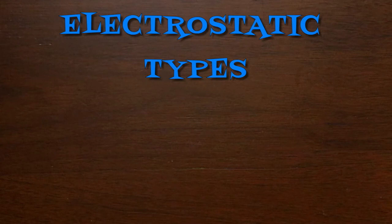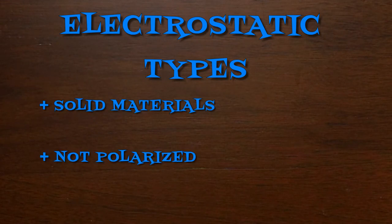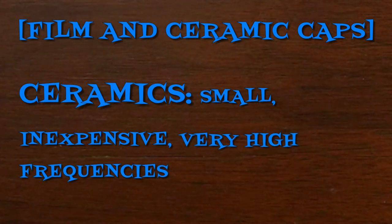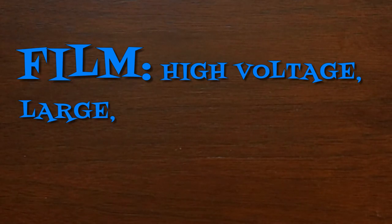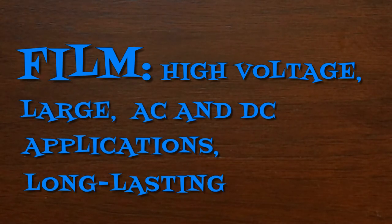Group number two: electrostatic capacitors. These capacitors are made out of solid materials and are not polarized. You'll find your film and ceramic caps here. Ceramics are typically very small and inexpensive, like electrolytics, but are used at very high frequencies. Film capacitors, on the other hand, tend to be high voltage and very large in size. They can be used in both AC and DC applications and last a long time.